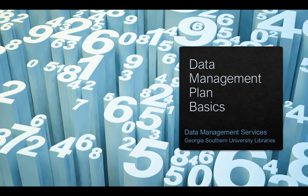For help understanding data sharing requirements, preparing DMPs, or archiving and sharing your data, contact your Liaison Librarian or Jeffrey Mortimore, Discovery Services Librarian, at jmortimore@georgiasouthern.edu or 912-478-0102.